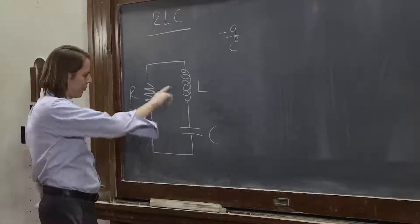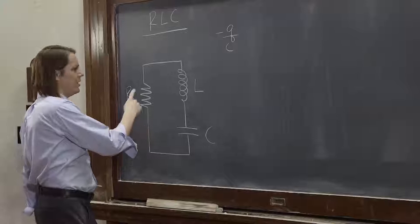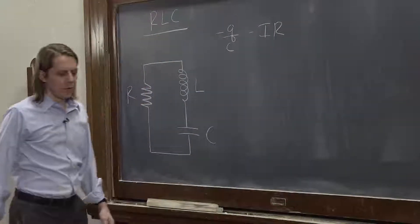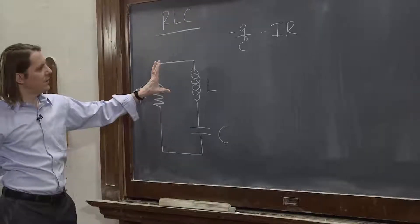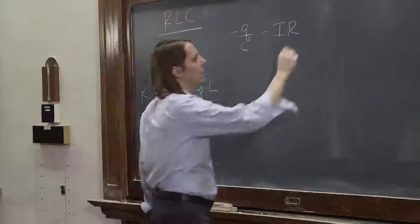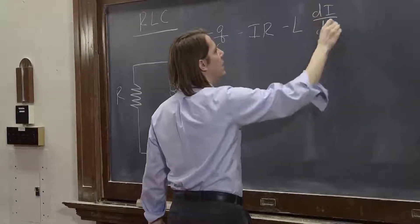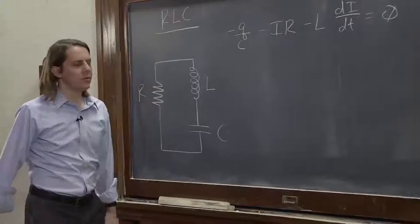And then, oh I drew them in a different order from my equations, the resistor is of course minus IR, the voltage drop across the resistor, and then the inductor is minus L dI/dt. Now let's say that's equal to zero.